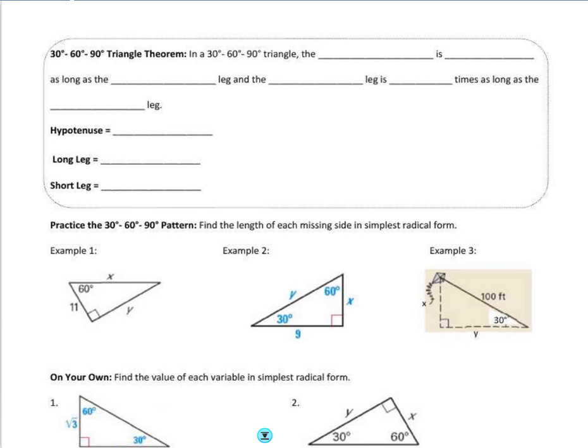Our second special right triangle is the 30-60-90 right triangle, where the two acute angles formed are 60 degrees and 30 degrees, where one is half of the other, or one is double from the other.